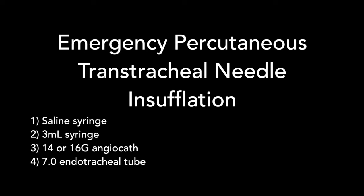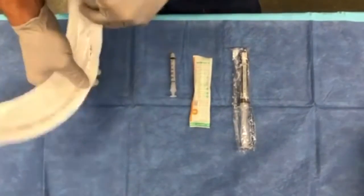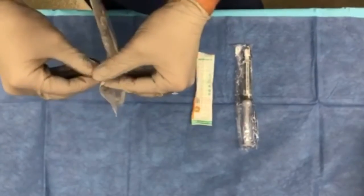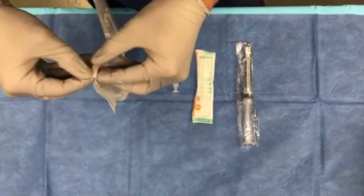In case of emergency, such as laryngospasm and the inability to ventilate a patient, a percutaneous transtracheal needle insufflation device can be created with the following materials. The video shows how to assemble these to have them ready on the back table in case of such emergency.